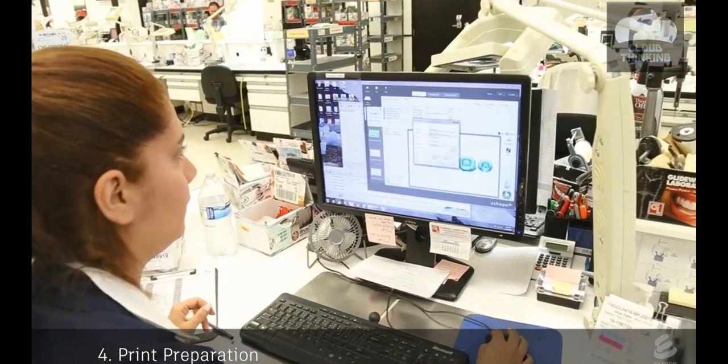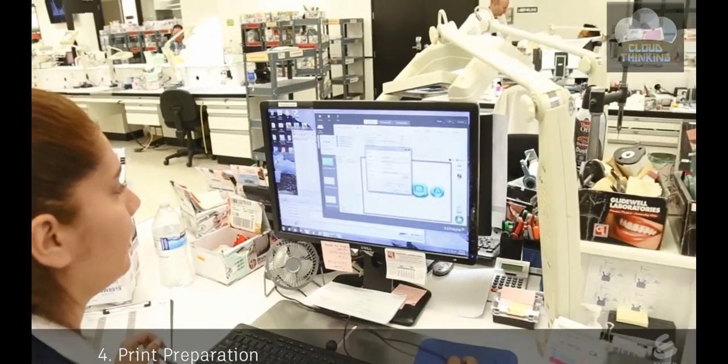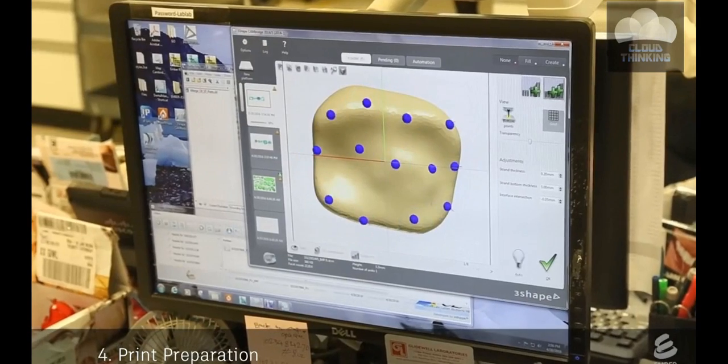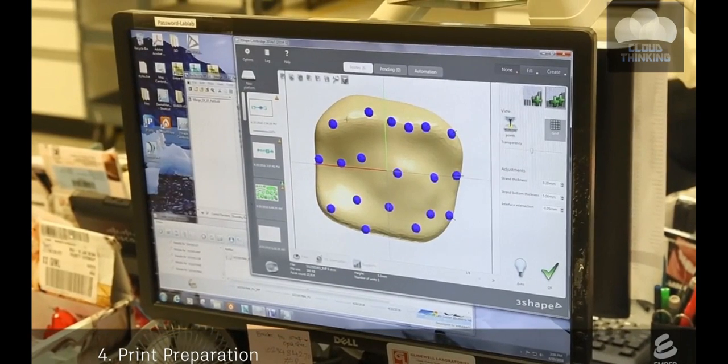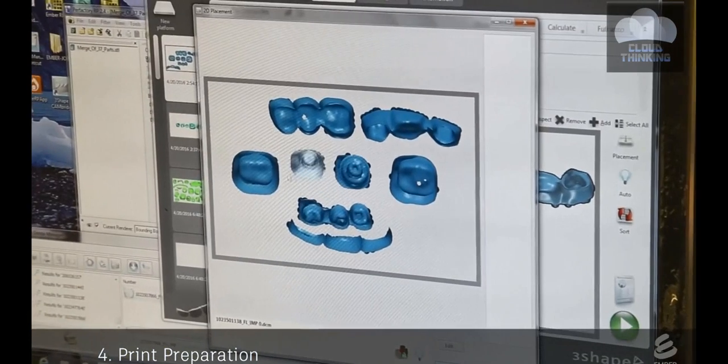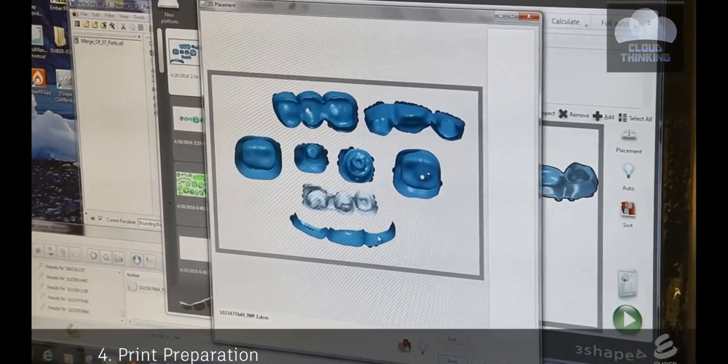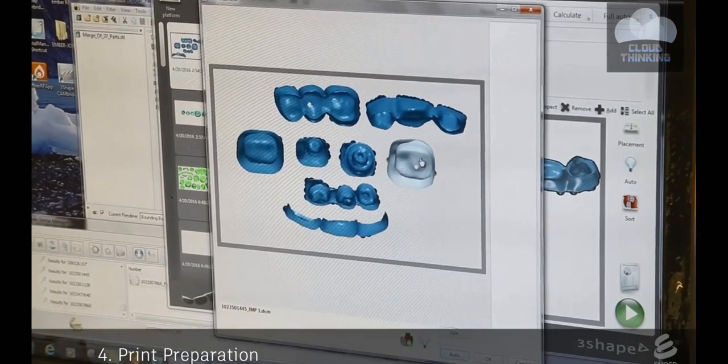Next, the models for the crowns and copings are prepared for 3D printing on Ember. A tech uses special dental software to add supports onto the model. Then the models are tightly arranged in a plane. This nesting allows many crowns to be printed at once, improving the efficiency of the process.